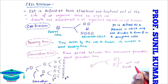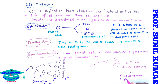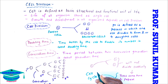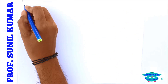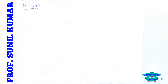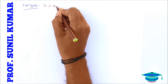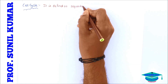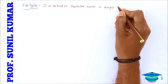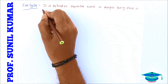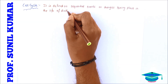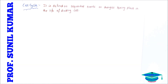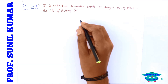When one cell divides to form two cells, those two cells will not divide suddenly — they will take some time to prepare and develop themselves before becoming ready to divide. That time is what we call the cell cycle. The cell cycle is defined as the sequential events or changes that take place in the life of a dividing cell, including growth, development, and maturity.